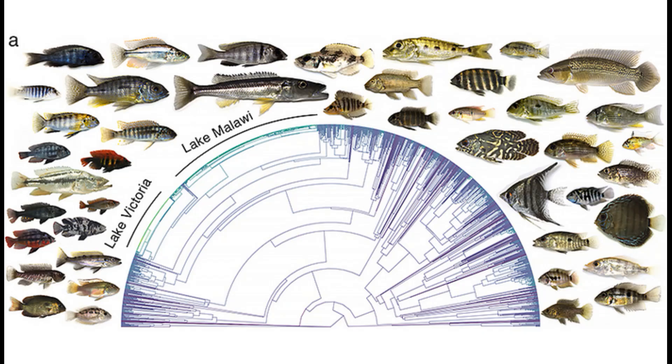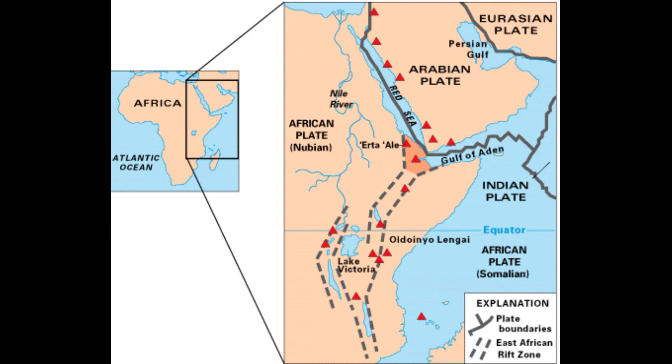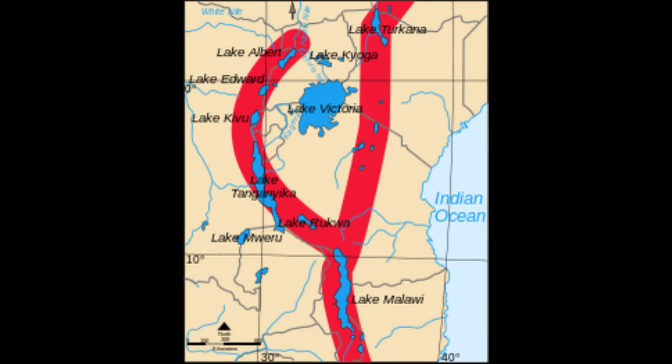Either way, the greatest diversity of extant cichlids is currently found in Africa, specifically East Africa. Africa is itself being pulled apart by tectonic forces, a process called rifting. In East Africa there are three rifting events simultaneously occurring, forming rift valleys, and within these rift valleys form deep freshwater lakes. The most well-known of these lakes are Victoria, Malawi, Tanganyika, and Kivu, which collectively have over 1,000 species of cichlids.